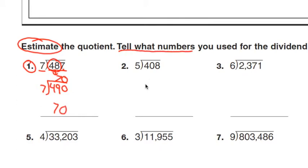Then it says tell what numbers. You would say 49 and 7.